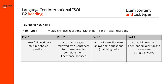Part 3 asks candidates to read four short texts and assesses their ability to understand the purpose of the texts, locate specific information, and awareness of the writer's stance and attitude. Candidates are provided with seven questions which indicate which text provides the answer to each question. This is a matching task.